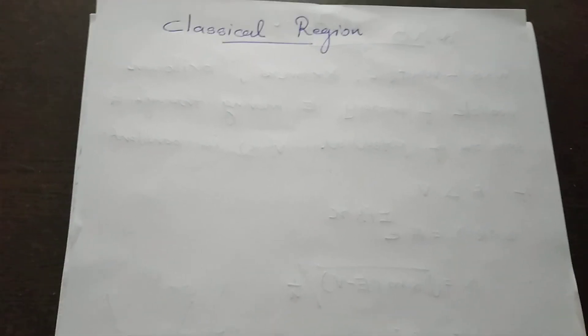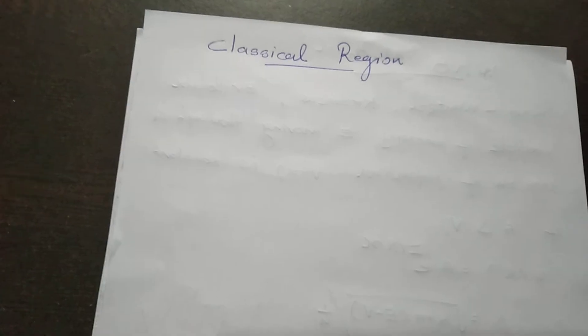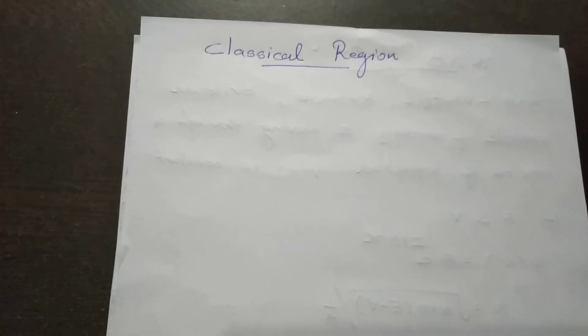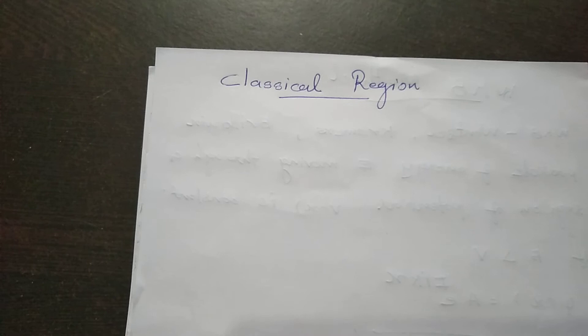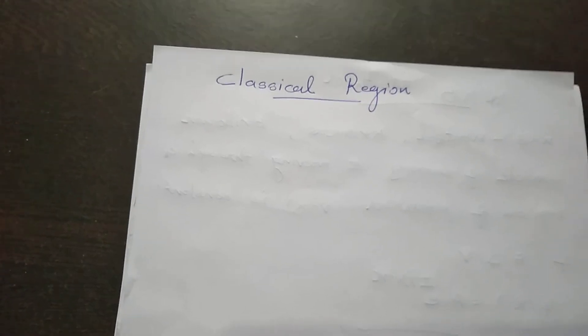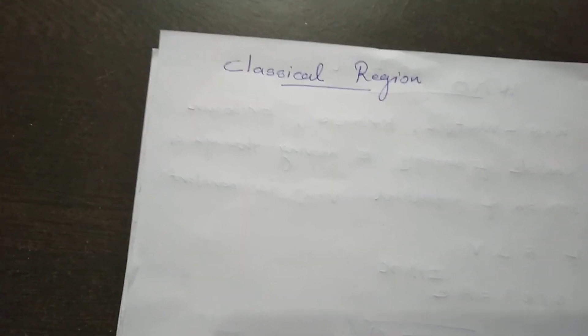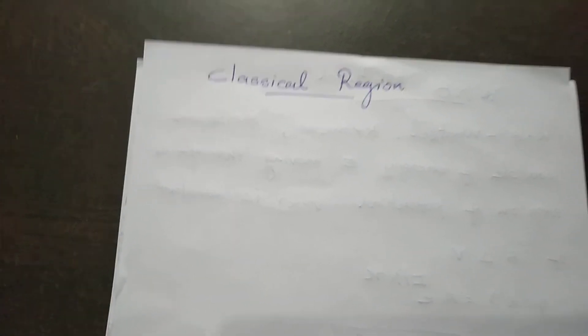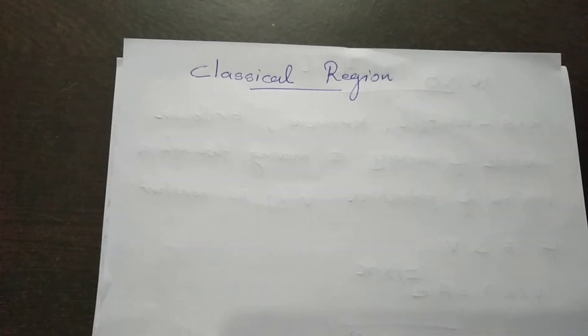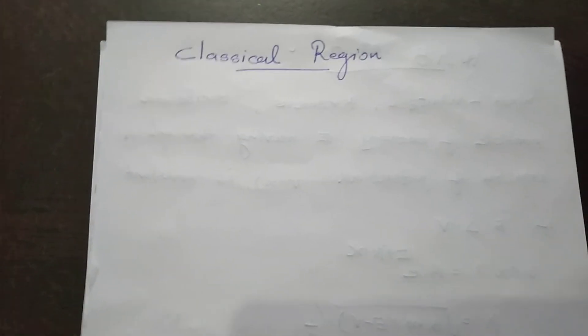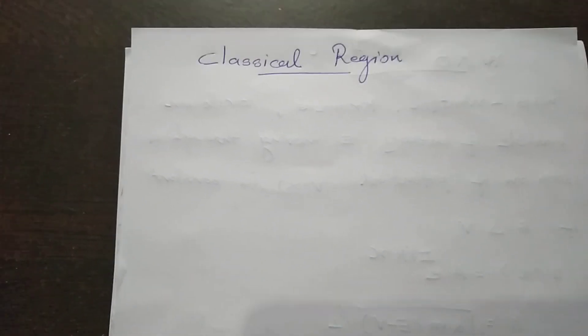Good morning. We are discussing the classical region. The WKB method is called the WKB approximation method. In the previous video, we introduced the classical region. WKB is called when E is equal to V.